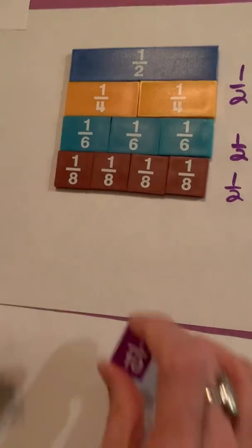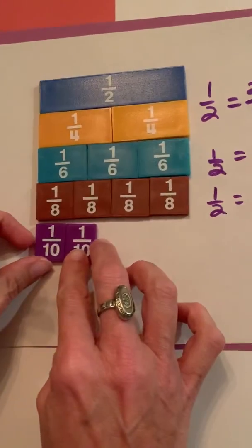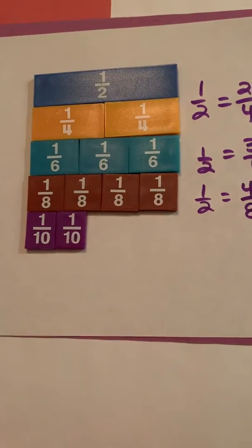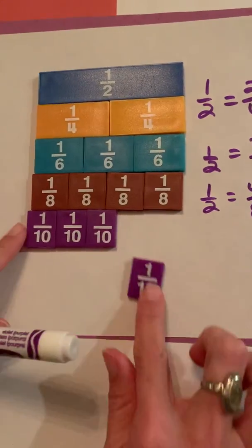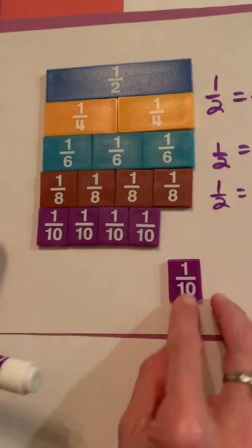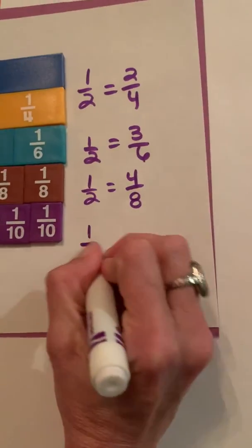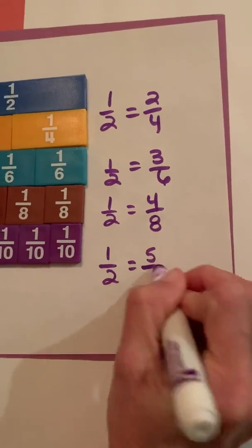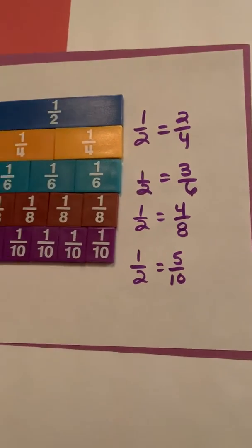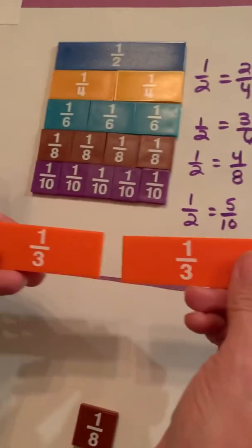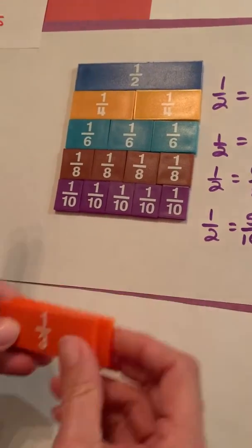And finally, let's try our tenths. Let's see, one tenth, two tenths, three tenths, four tenths, and five tenths. So yes, one half is equal to five tenths. So the only thing that wasn't equal to a half were my thirds. They did not work out and that's okay.